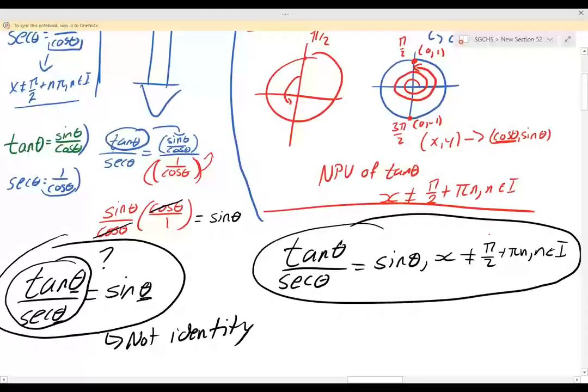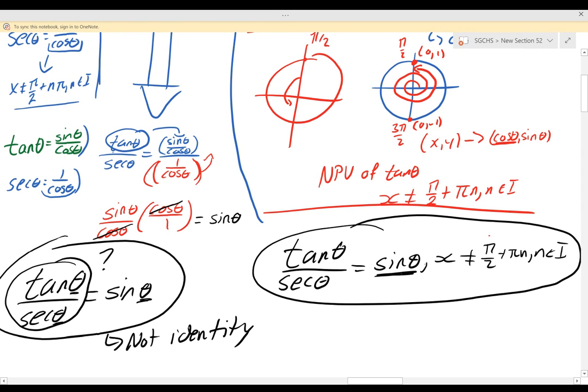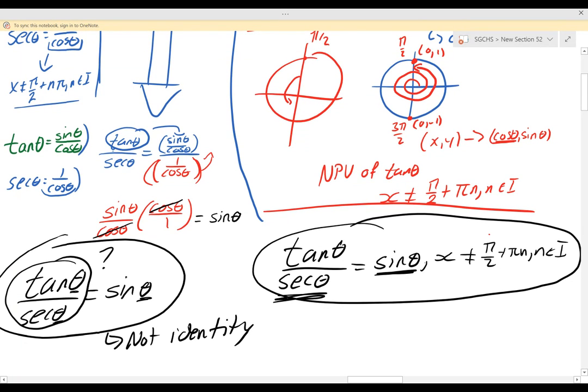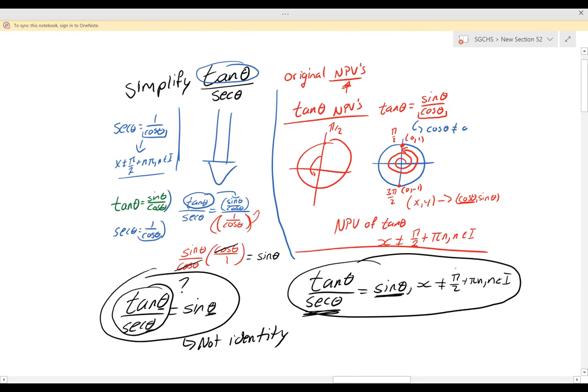So this is not a true identity because they both do not have the same domains. This has no restrictions on x. This does have a restriction on x. Now that's how to solve it using—or simplify—using quotient rules and reciprocal rules, or sorry, identities.